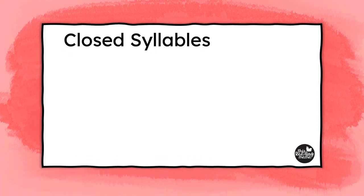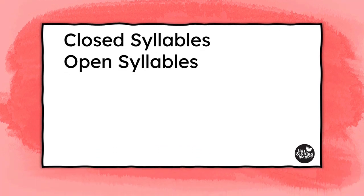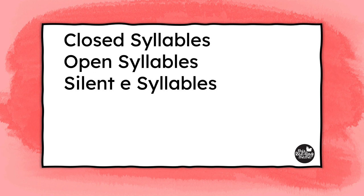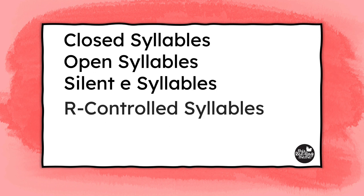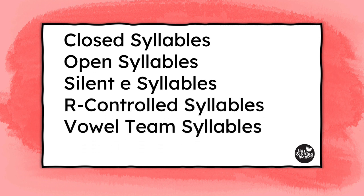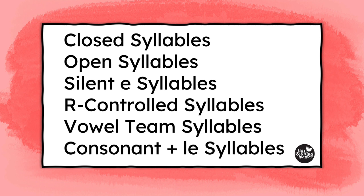The six-syllable types include closed syllables, open syllables, silent E syllables, R-controlled syllables, vowel-team syllables, and consonant plus LE syllables, sometimes called final stable syllables. Today, we're moving on to silent E syllables, and sometimes I'll refer to these as CVCE syllables.